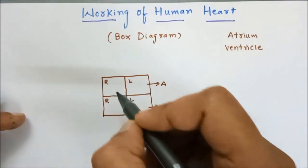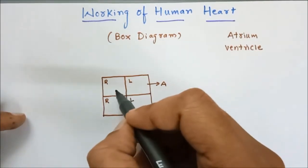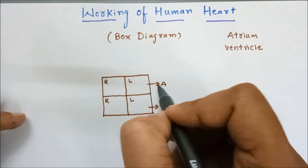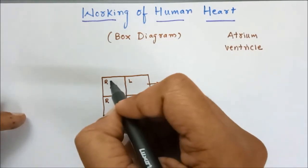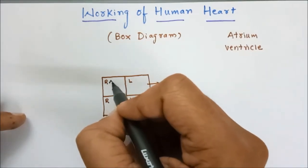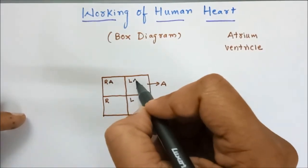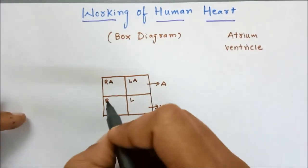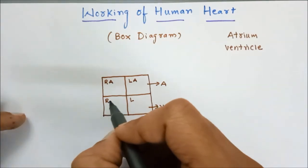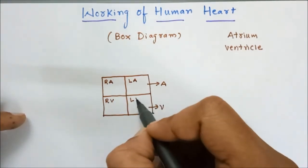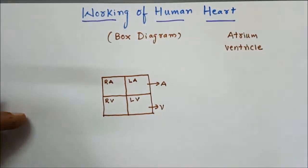These two upper chambers are the atria. So this is the right atrium, this is the left atrium, this is the right ventricle, and this is the left ventricle.